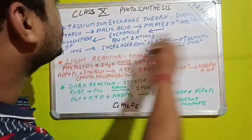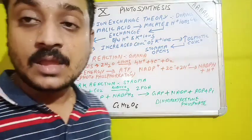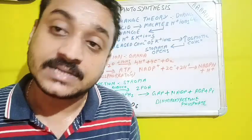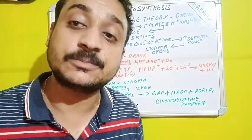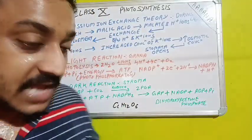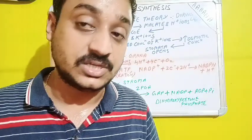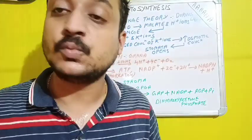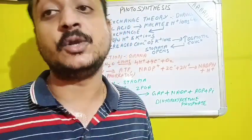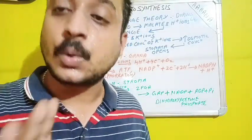One more important point about the potassium ion exchange theory: the exchange between H⁺ and K⁺ ions, as well as the movement of Cl⁻ ions into the guard cells, is an active process — not passive. It requires the expenditure of ATP. If ATP is not available, the K⁺ ion exchange theory will not operate. The energy for this process is produced by the chloroplast.